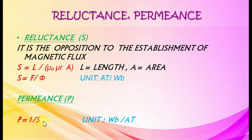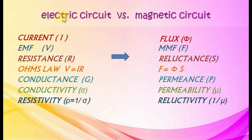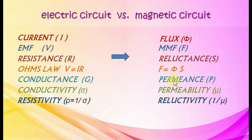Electric circuit versus magnetic circuit analogy. Current in electric circuit corresponds to flux in magnetic circuit. EMF in electric circuit corresponds to MMF in magnetic circuit. Resistance corresponds to reluctance. V equals IR corresponds to F equals phi times S. Conductance corresponds to permeance. Conductivity corresponds to permeability. Resistivity corresponds to reluctivity.